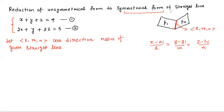If you draw a normal line on a plane, it is perpendicular to the plane — whatever lines the plane contains, the normal will be perpendicular to them. So the intersecting line lies on both plane 1 and plane 2. The normal to plane 1 will be perpendicular to the intersecting line, and the normal to plane 2 will also be perpendicular to the intersecting line.